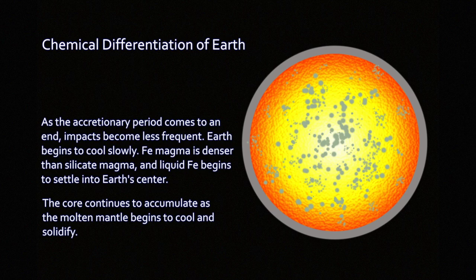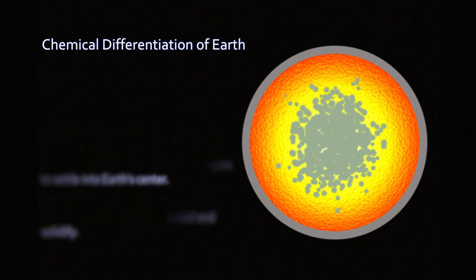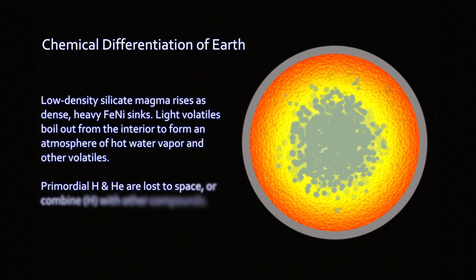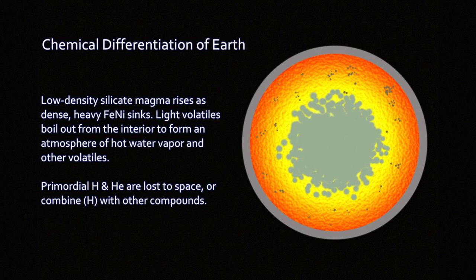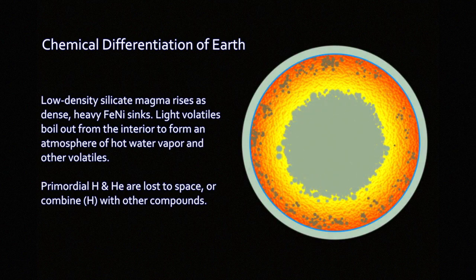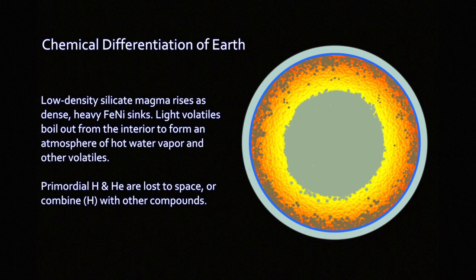Iron-nickel is going to sink toward the center, as I just said, because it's denser, but also because its mass as magma is not blending with the silicate magma. Iron magma and silicate magma don't mix, like oil and water. And so both in the same environment, the same setting inside the Earth, will essentially travel past each other.